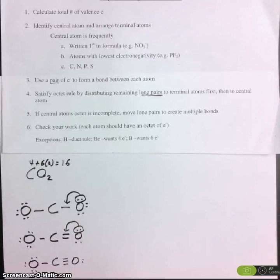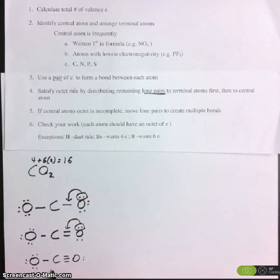Step number six, check to make sure each atom has an octet, and it does. So this would be an appropriate Lewis dot structure for carbon dioxide.